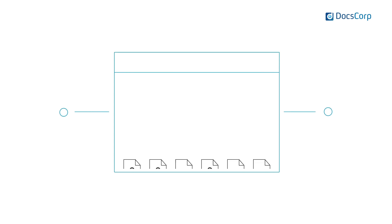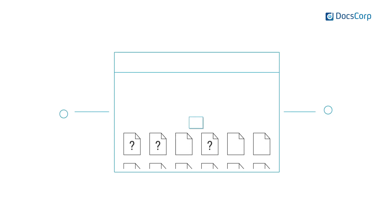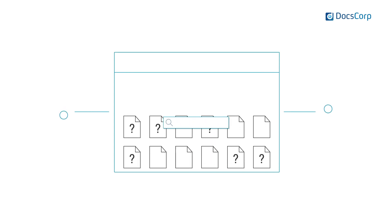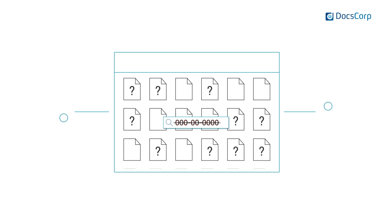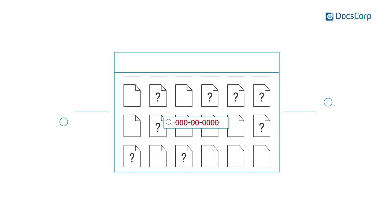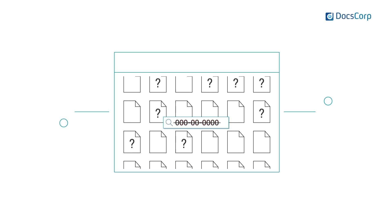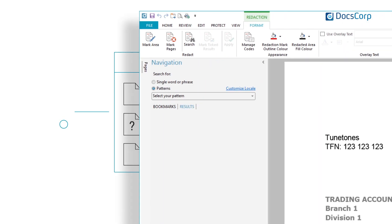They can't literally read through thousands of pages of documents, and they can't literally type in a specific social security number to search for, because they don't know the number — and also there might be many, many of those in there.